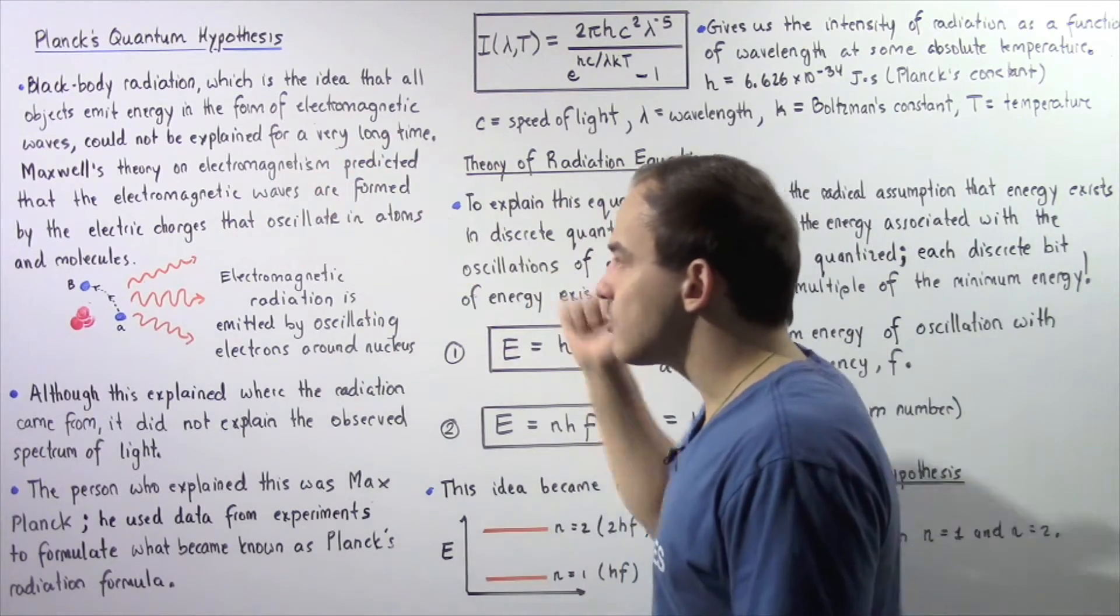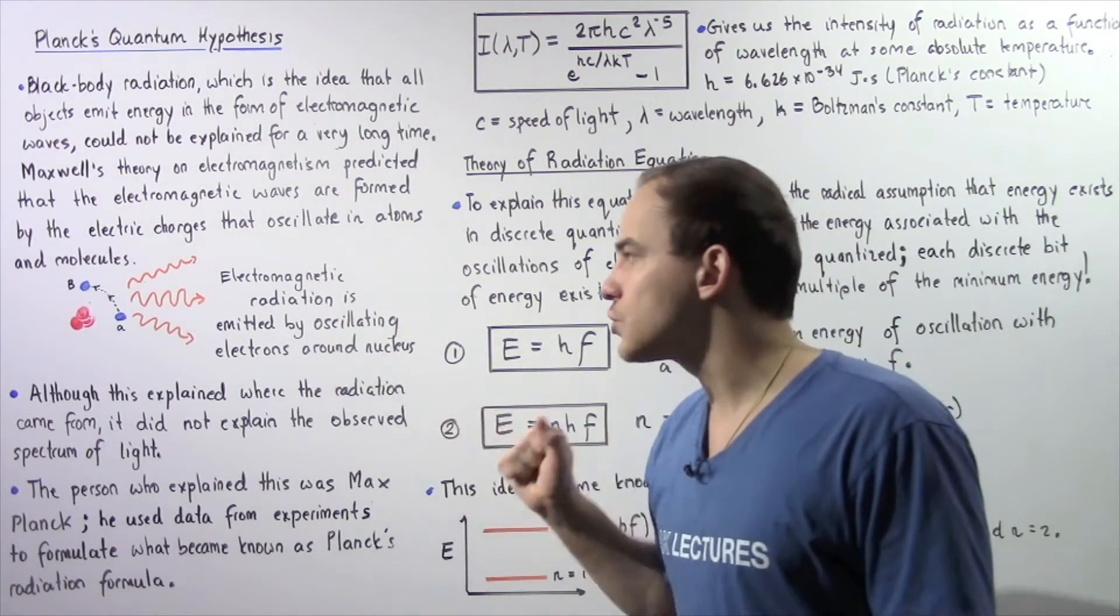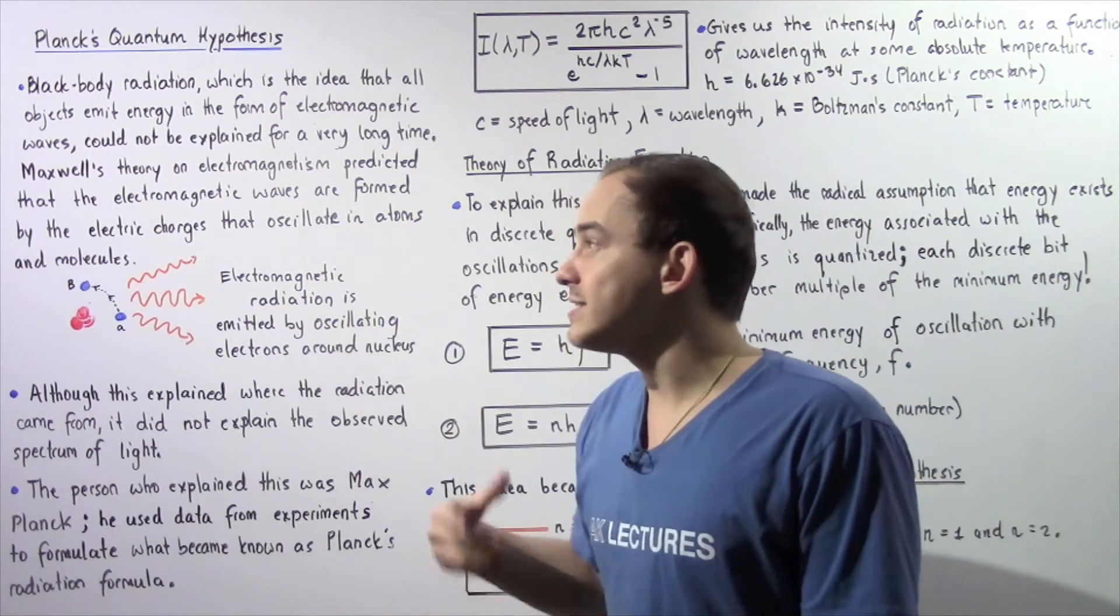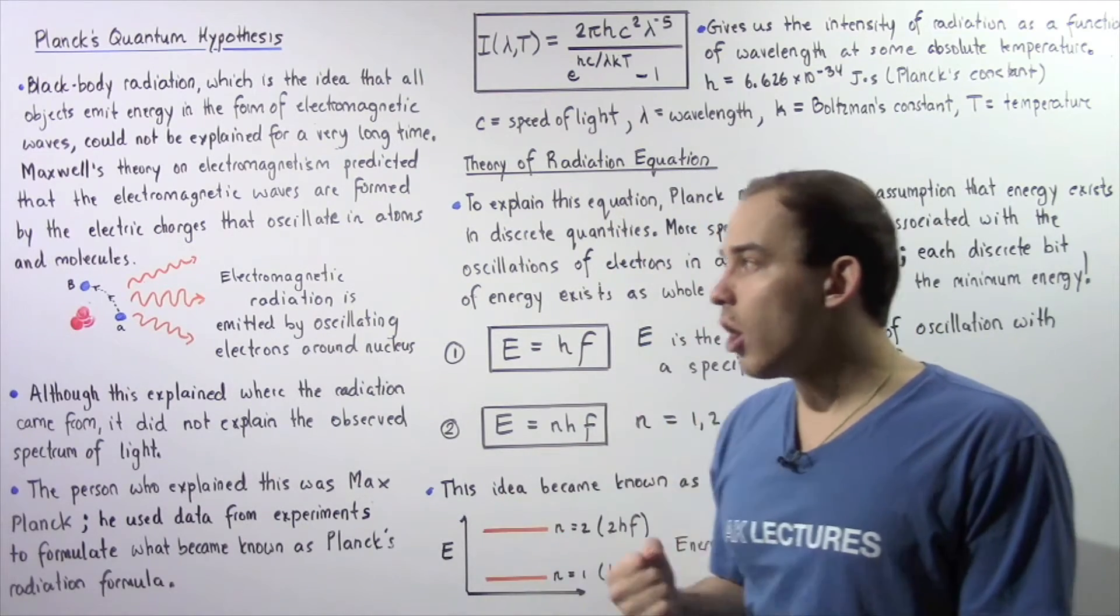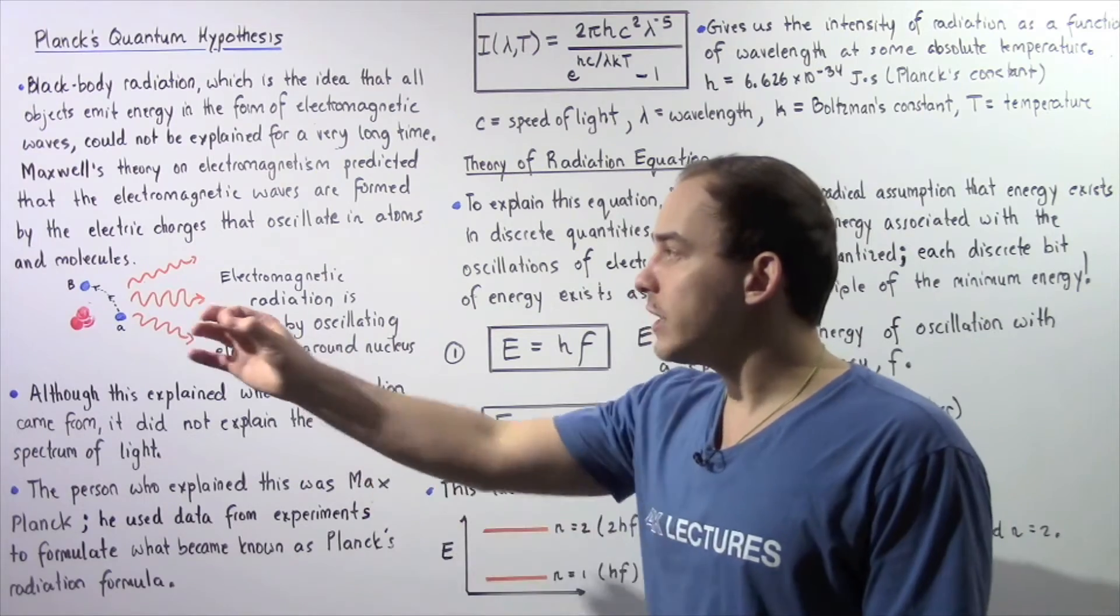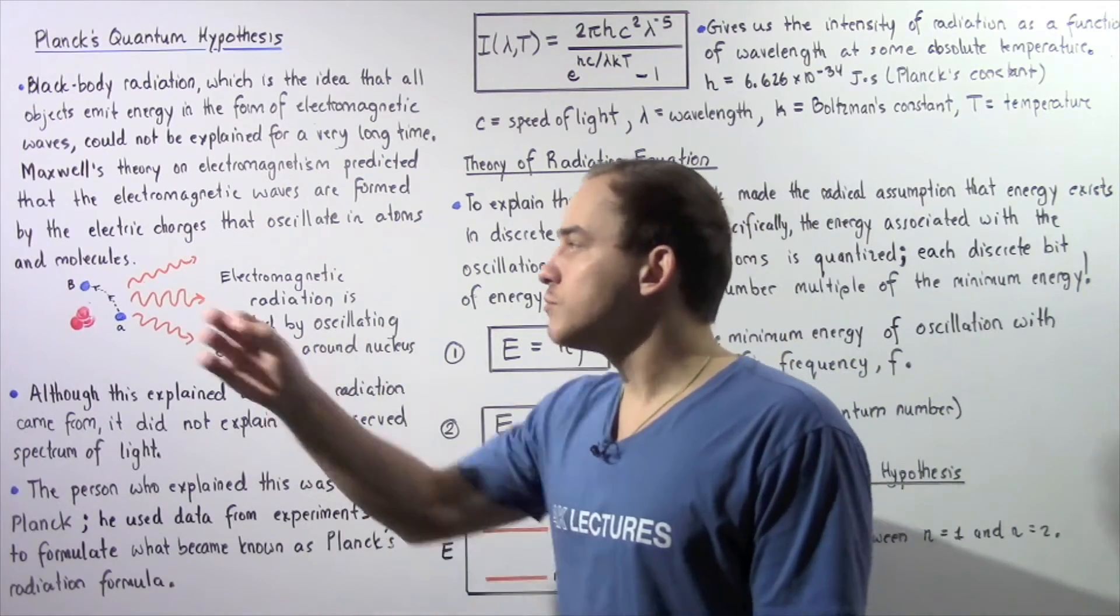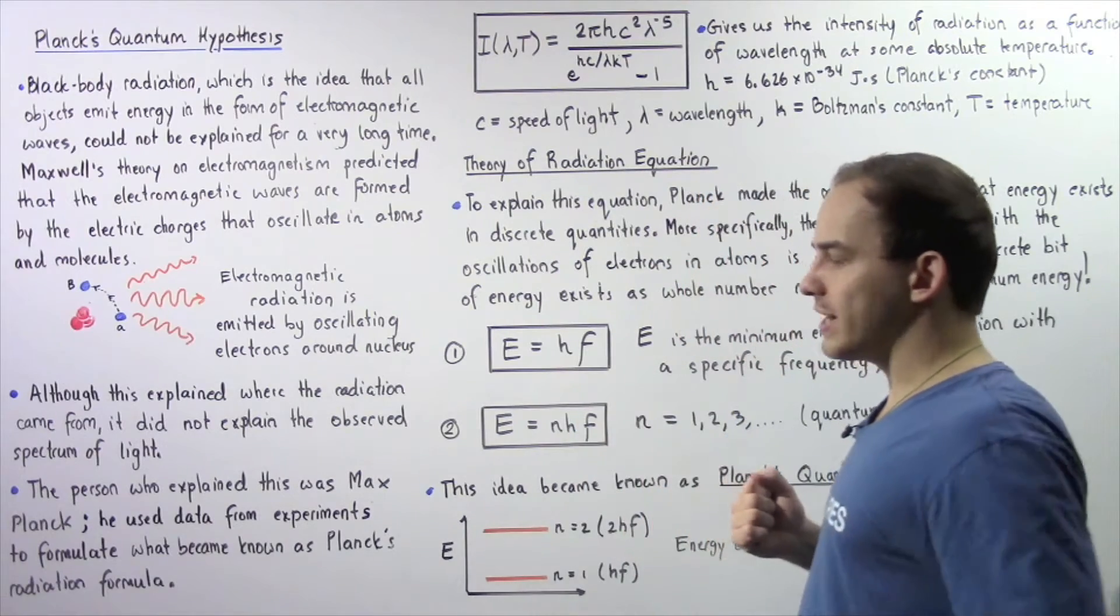So electromagnetic radiation is emitted by the oscillations of electrons around the nucleus, and that's because our electrons are subatomic particles that carry charge. So when an electron moves, electric charge moves with it, and that produces the electromagnetic radiation.